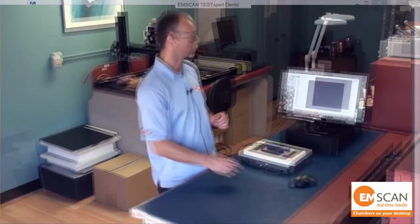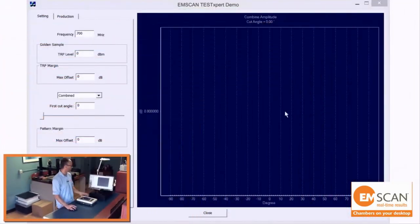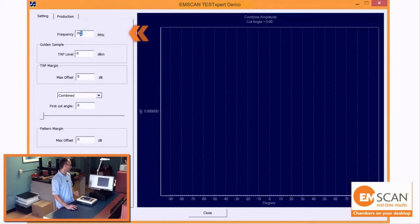First of all, we're going to set up our golden sample test for our golden sample device. I'll come over here and set the frequency that we'll be measuring at. In this case it is 2440 megahertz.